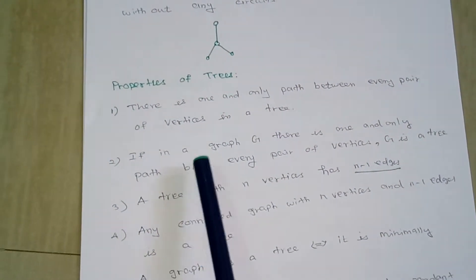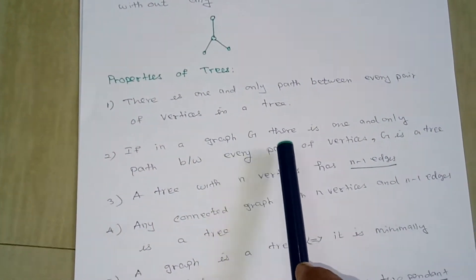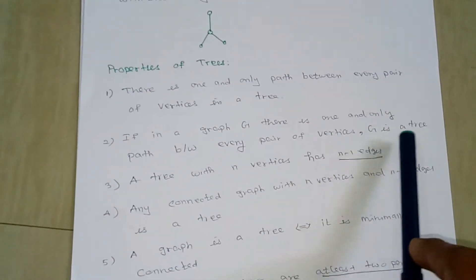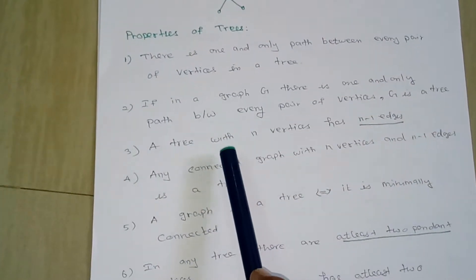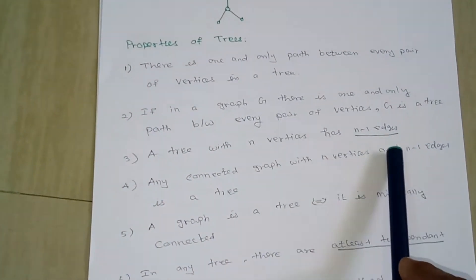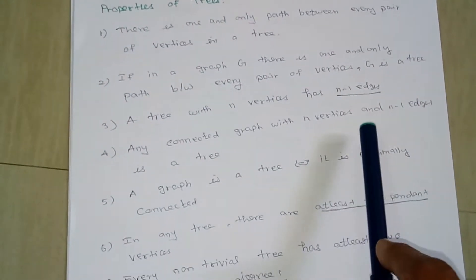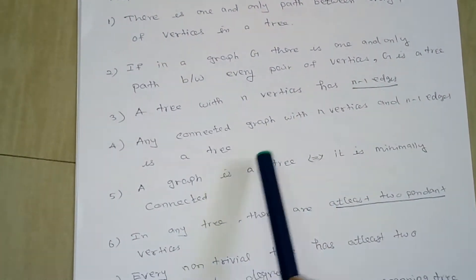Second, if in a graph G there is one and only path between every pair of vertices, G is a tree. Third, a tree with n vertices has n minus 1 edges. A connected graph with n vertices and n minus 1 edges is a tree.